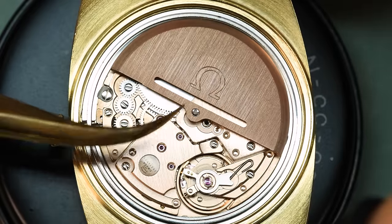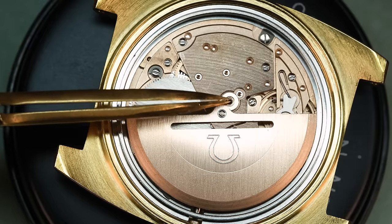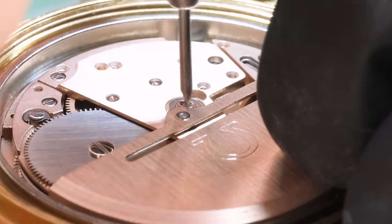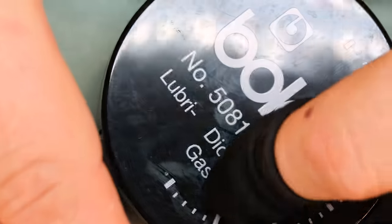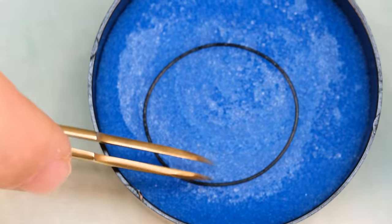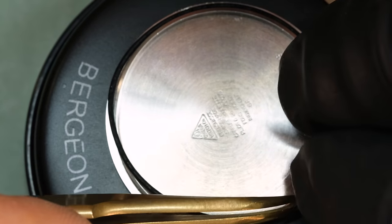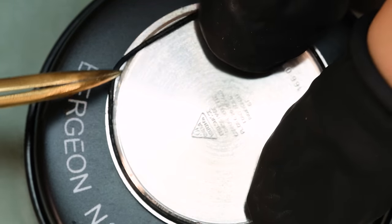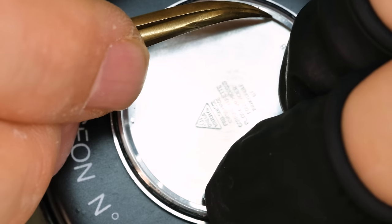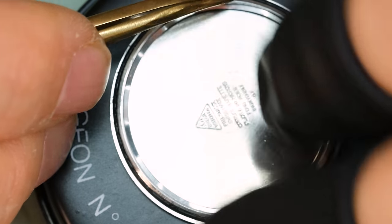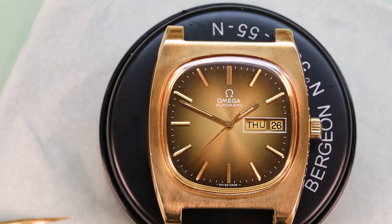Also good to see that the rotor cleaned up nicely after going through the cleaning machine. And then lastly, let's put in a new gasket. The old one had pretty much disintegrated. And there we are. Handsome looking 70s watch.